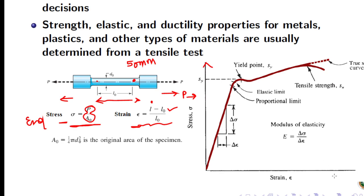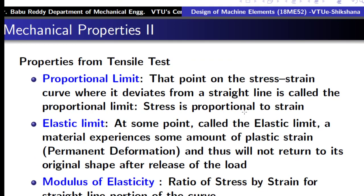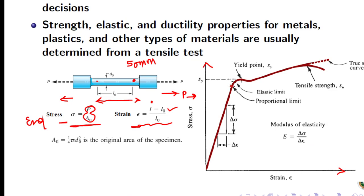When we plot stress on the y-axis and strain on the x-axis, we get a stress-strain curve. On this curve we can define many properties. The first is the proportional limit — the point on the stress-strain curve where it deviates from a straight line. Up to this point it is a straight line; beyond it, it becomes a nonlinear curve. The point up to which the stress-strain curve is linear is called the proportional limit.